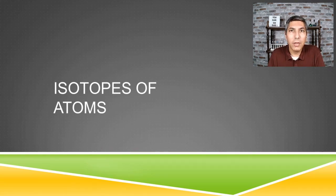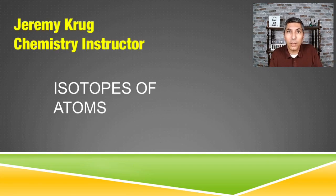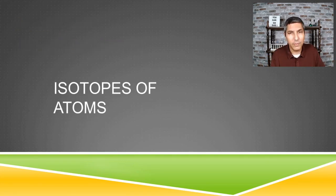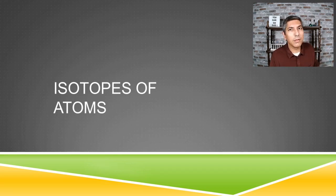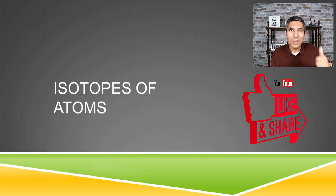Hi there and welcome back to chemistry. My name is Jeremy Krug and in this video we're going to be talking about isotopes of atoms and how we write the formulas and symbols for those. If you're new here, take a look at the playlist and other discussions on here. If you enjoy or learn something from this video, I'd like to encourage you to give me a thumbs up.